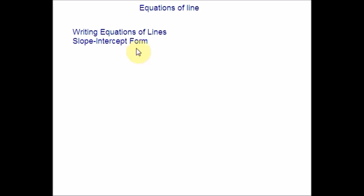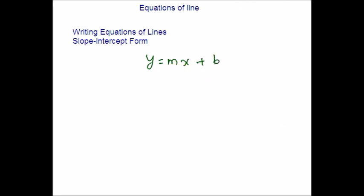Slope-intercept form. Perhaps the most familiar form of a linear equation is the slope-intercept form. It is written as y = mx + b (or c). M is the slope and b is the y-intercept. The slope of a line refers to the ratio of the vertical change in y over the horizontal change in x between any two points on the line.